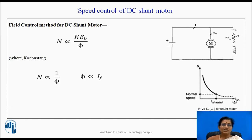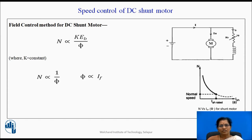Speed control of the DC shunt motor has two methods: field control method and armature control method. For the field control method, speed is directly proportional to back EMF and inversely proportional to flux, and flux is directly proportional to field current. If we insert a resistance in series with the field winding, we can only decrease the flux. By increasing the resistance in series with the field winding, field current decreases, flux decreases, and speed increases. So by this method we can only increase the speed; we cannot decrease the speed.